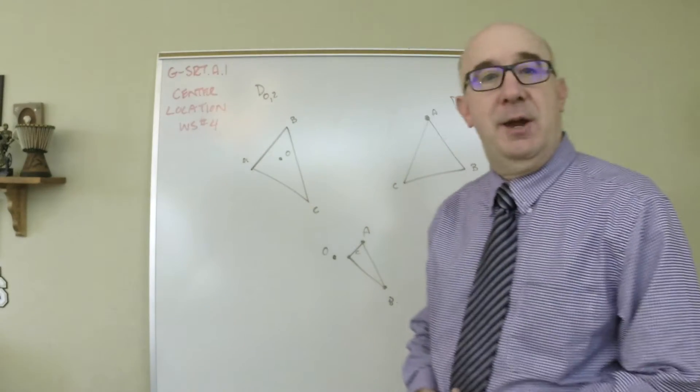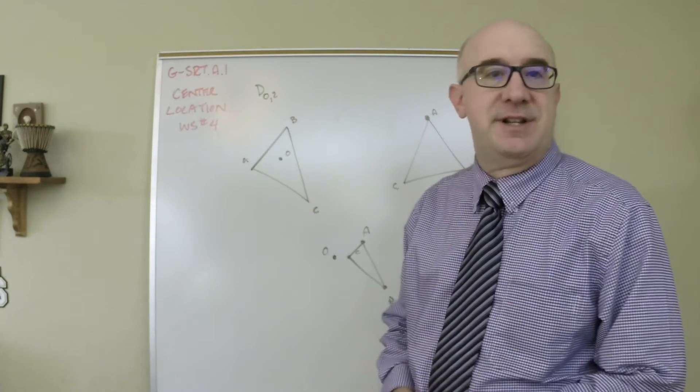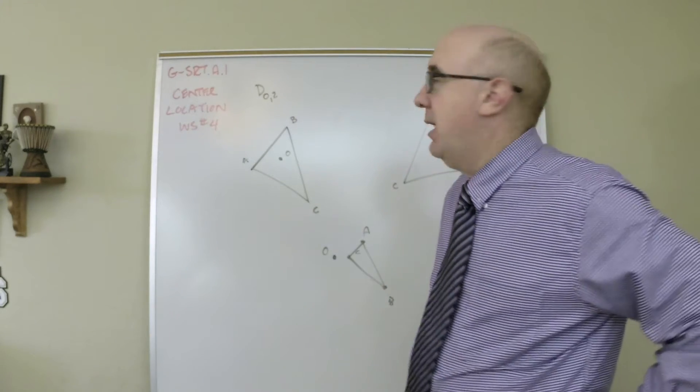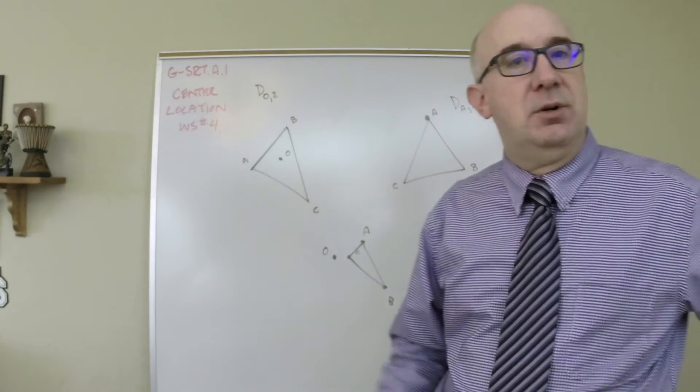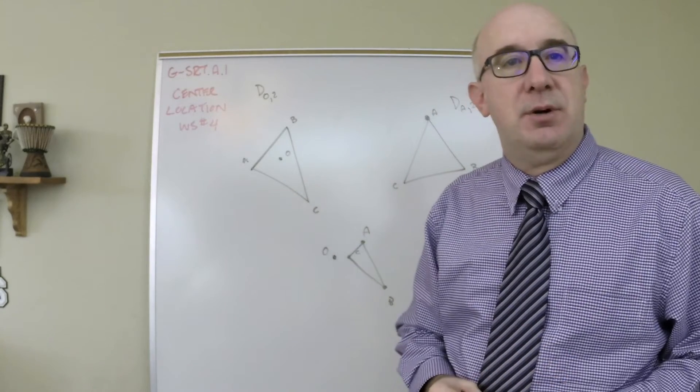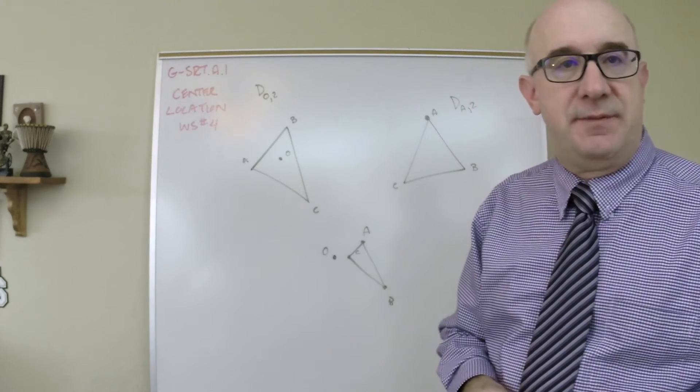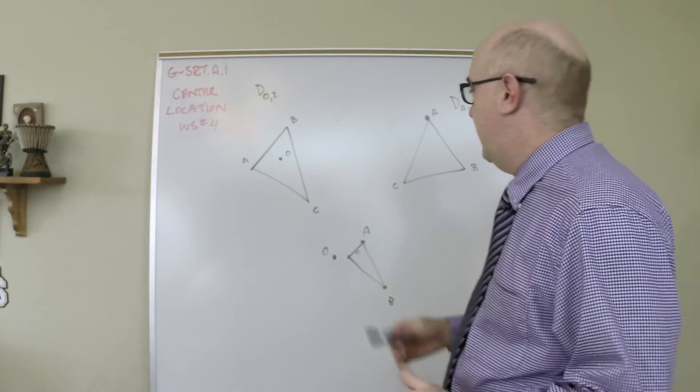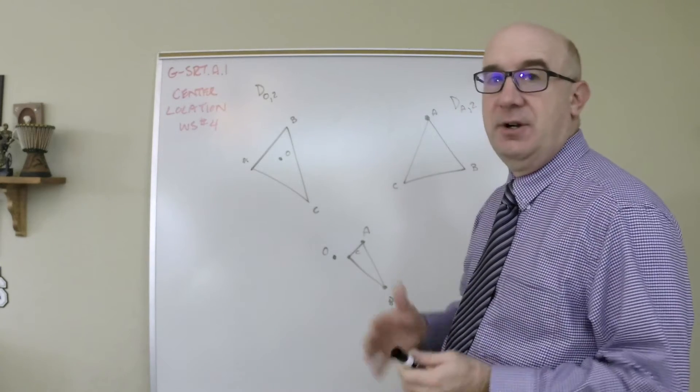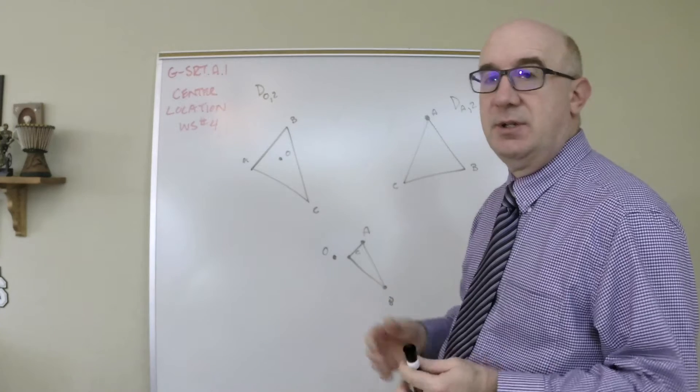This is GSRA1 still. We're looking at different center locations and I'm going to be quick here because I want to do a demonstration on the computer as well as look at some specifics off the worksheets. The idea here is if our center is in different locations, what does it do?